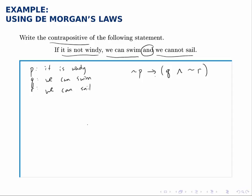So this still looks complicated but it's more concise than the English statement. To write the contrapositive, remember we reverse the arrow and negate both pieces. So the contrapositive